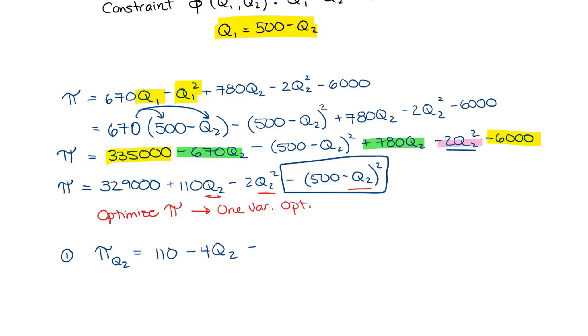So this is going to be minus 2 times 500 minus Q2, all to the power of 1, times the derivative of Q2 on the inside which is minus 1. So I have a minus and a minus, so this really becomes a positive. So this gives me 110 minus 4Q2 plus 1,000 minus 2Q2. So I'm combining my like terms.